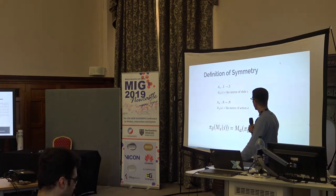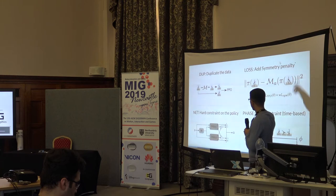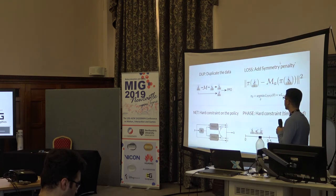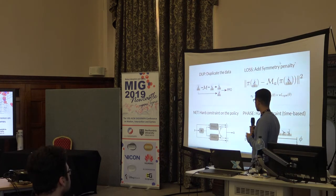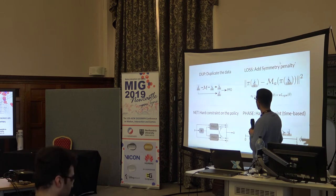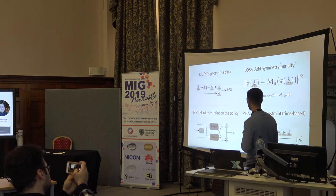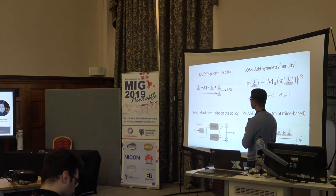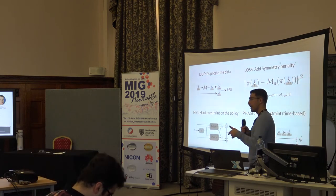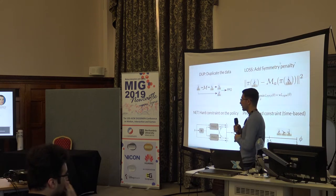So how do we enforce symmetry in our models? We experimented with four models. There's a lot in this slide, but I want everything to be in the same place so that you can see the ultimate comparison. The first method is the data augmentation method on the top left. The idea is that you get a trajectory, completely mirror all the states and the actions, add that to your dataset, and try to learn based on that.